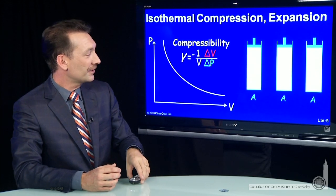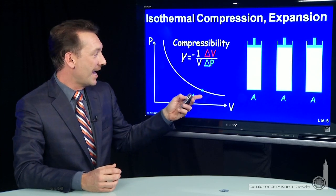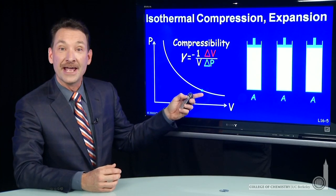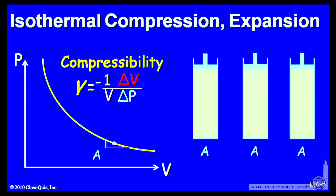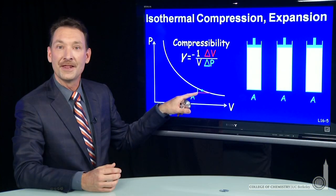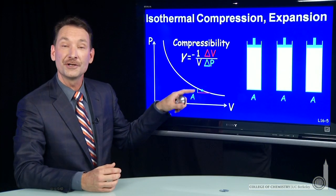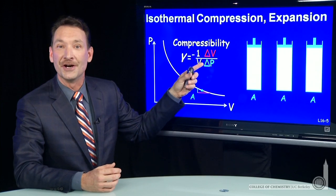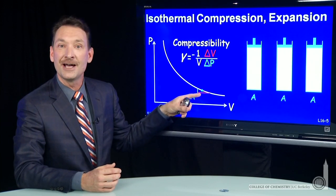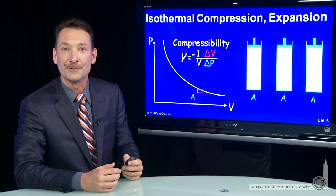Let's look at a couple of instances. Here, at point A on this curve, if I were to change the volume, I wouldn't need a very big change in pressure to do that. Notice the change in volume is large and the change in pressure is small, so this compressibility factor is large. A gas is easy to compress at high volume.